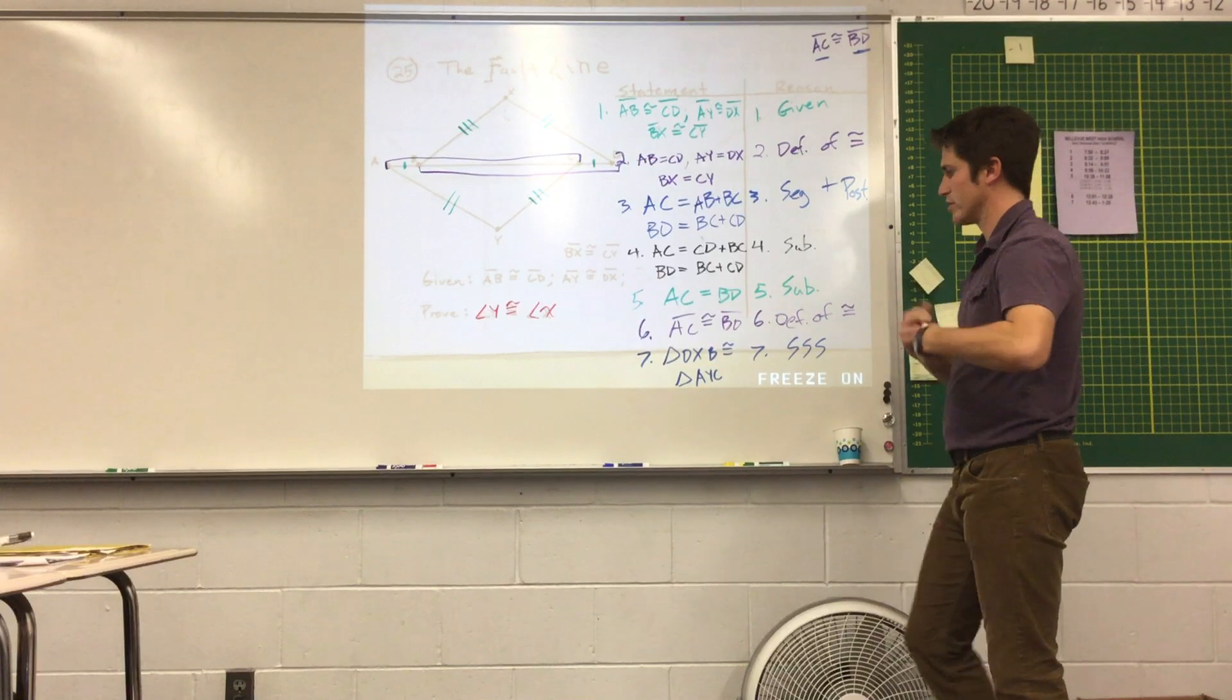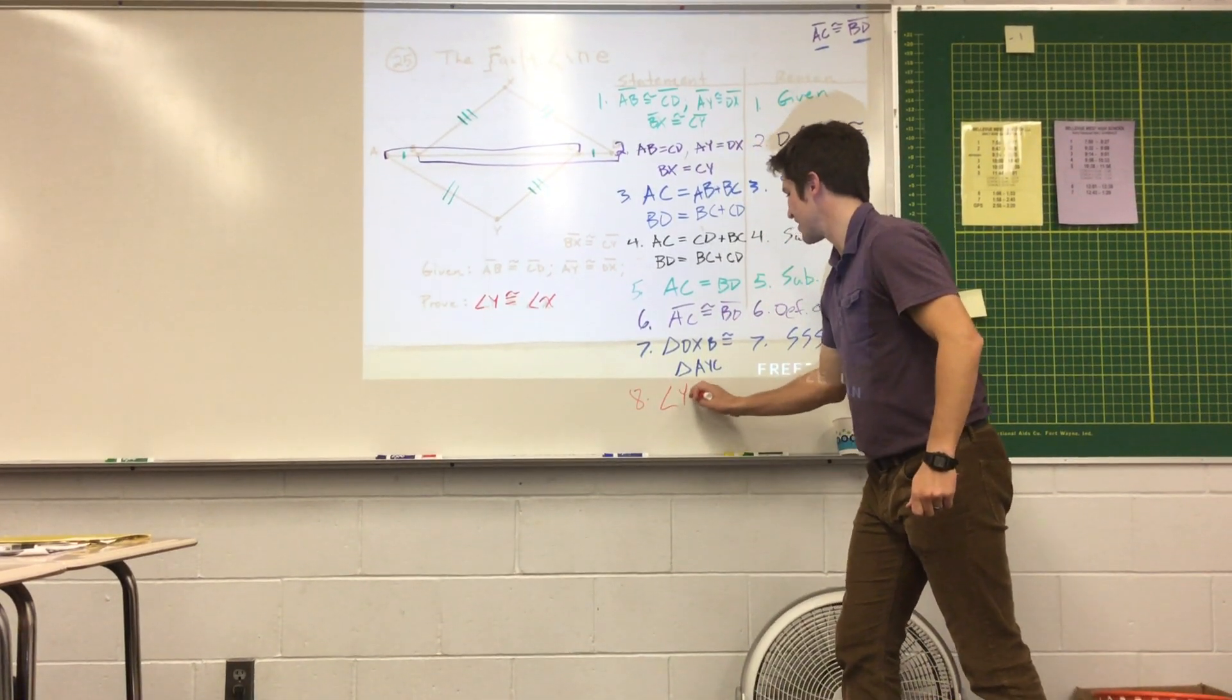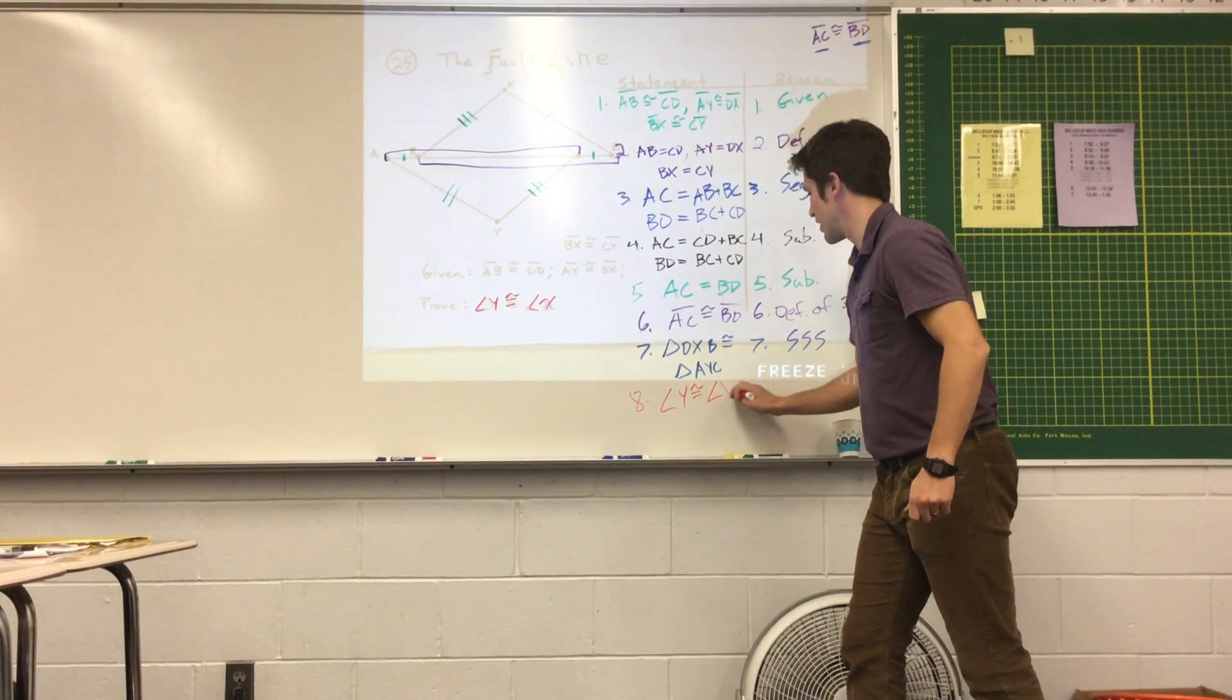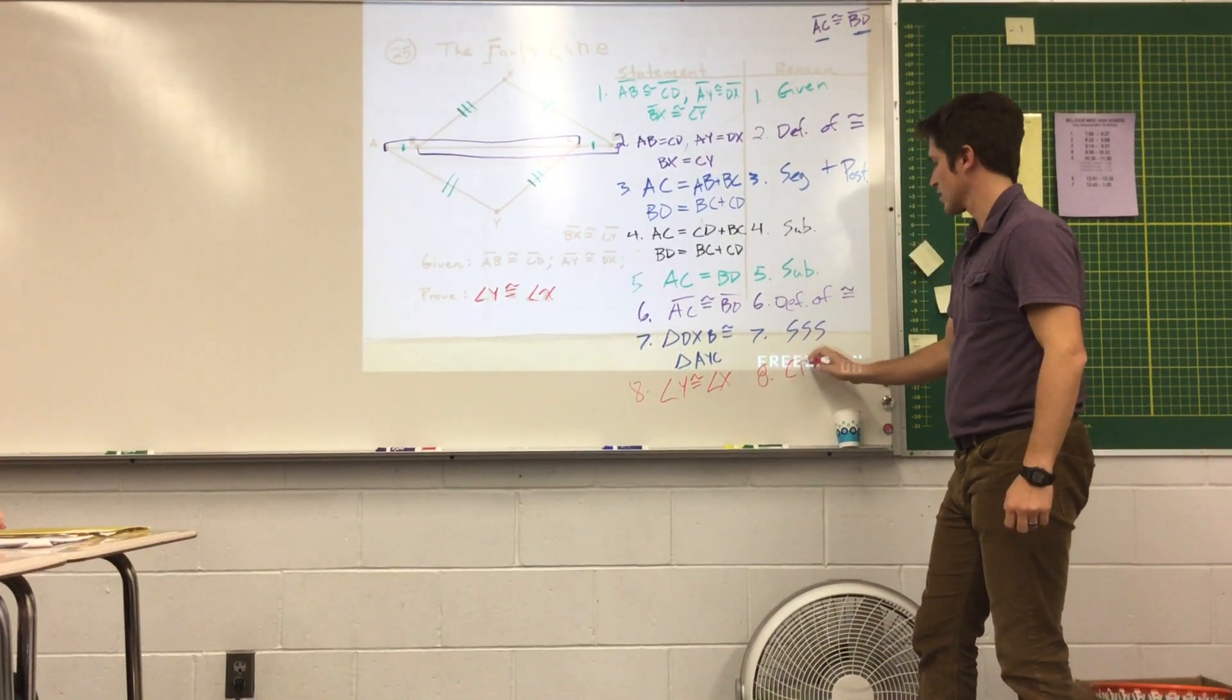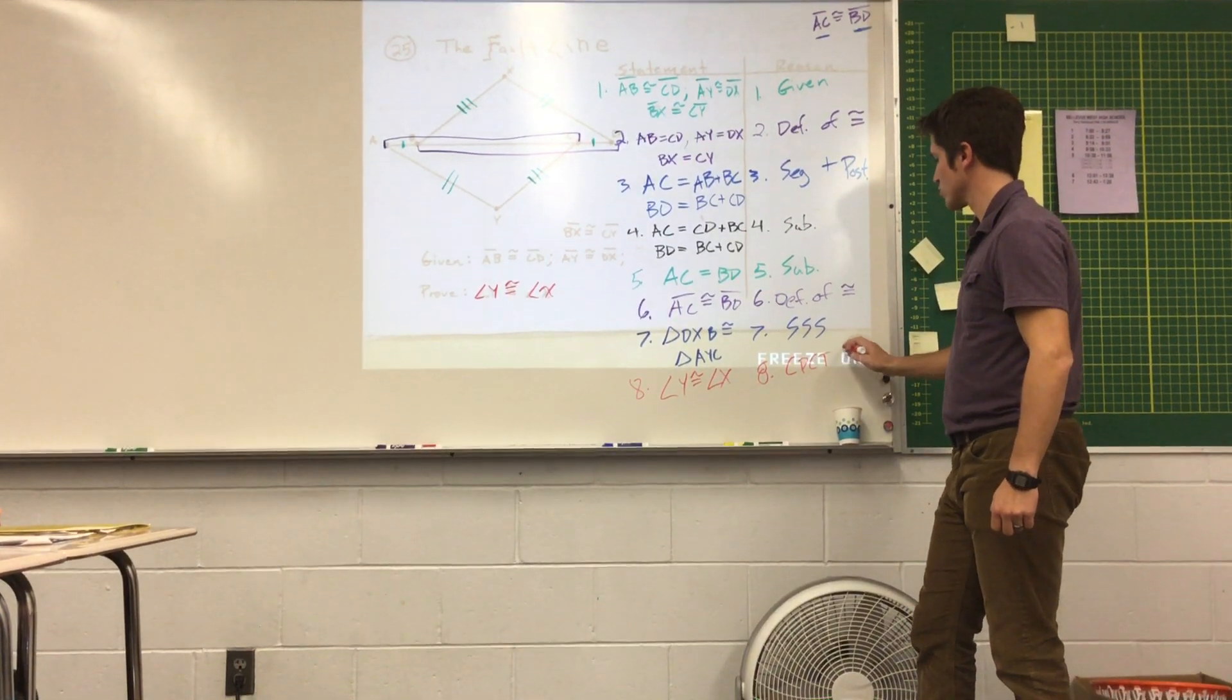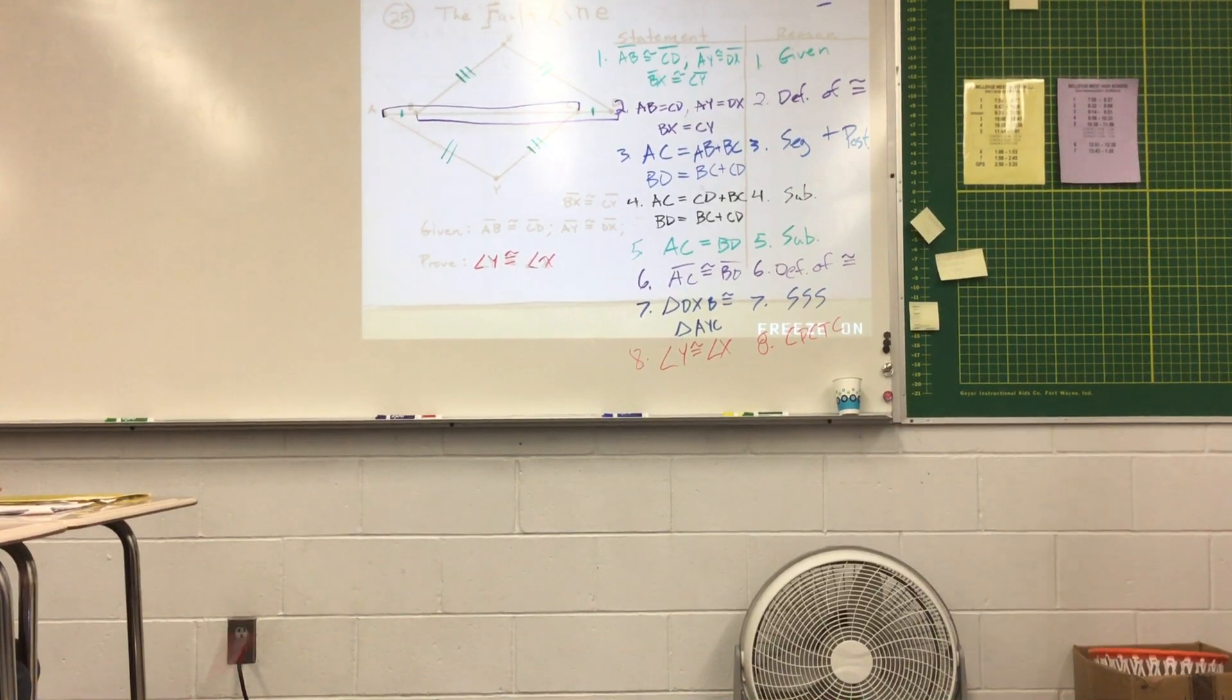After I've shown that the triangles are congruent, I can go ahead and say that Y is congruent to X because corresponding parts of congruent triangles are congruent.